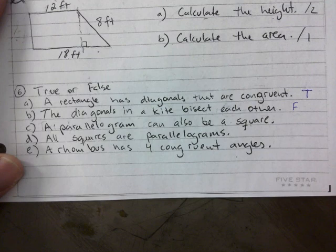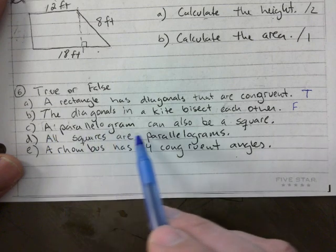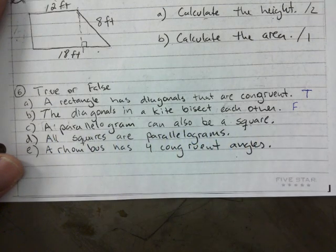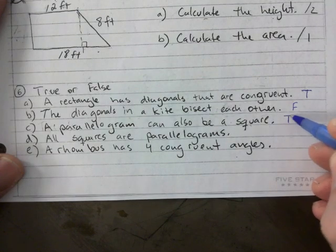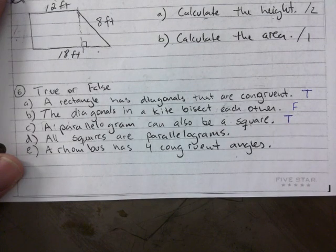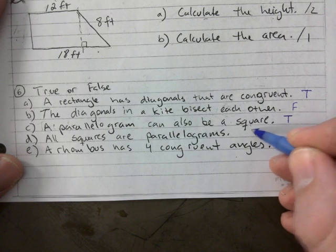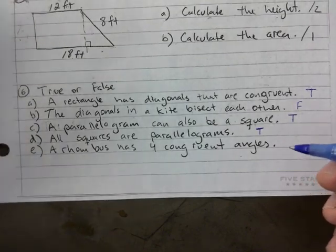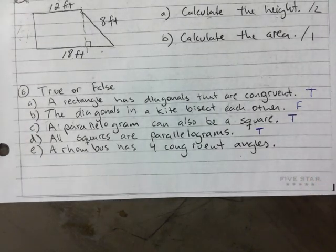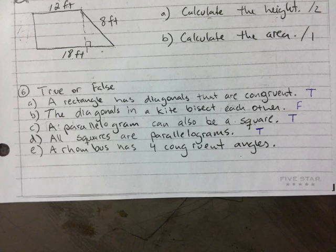Only the short one bisects — 'each other' is the key. 'A parallelogram can also be a square' — yes. 'All squares are parallelograms' — that's true. Remember: when you go from specific to general, going up is always true.